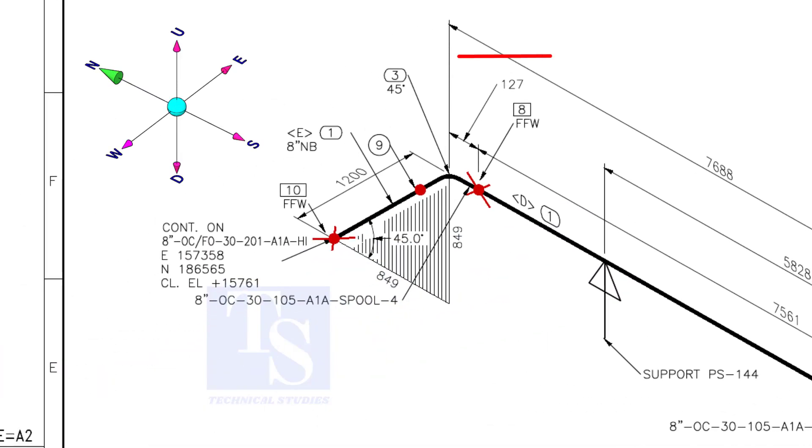As per the drawing, the pipe goes to the north and bends 45 degrees to the down direction. Let us fabricate and complete the welding separately.